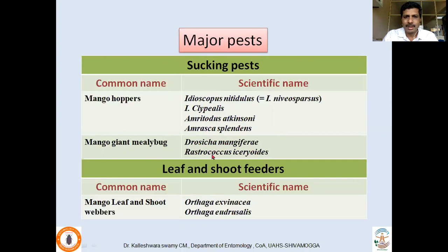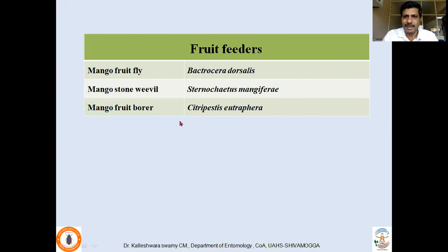The second mealybug species, Rastrococcus iceryoides, is becoming common. Leaf and shoot webber, Orthaga hexavitralis, is mostly restricted to South India, while Orthaga euadrusalis is now found in North India. The major fruit-infesting species are Mango Fruit Fly, Bactrocera dorsalis, and Stone Weevil, Sternochetus mangiferae. In fact, these two have quarantine importance as well.